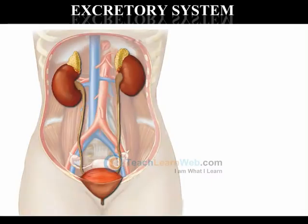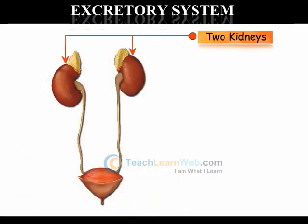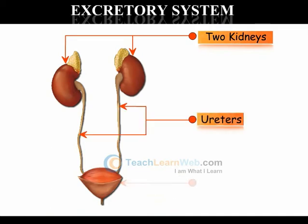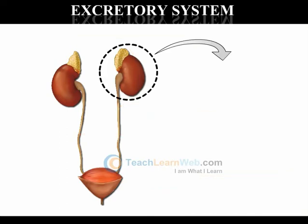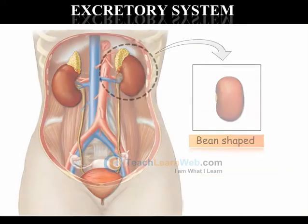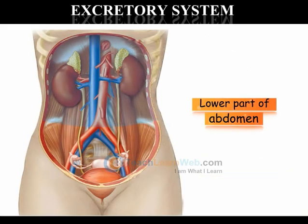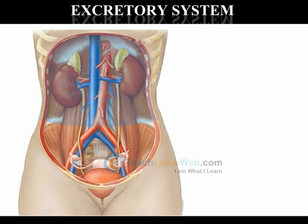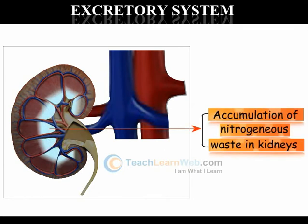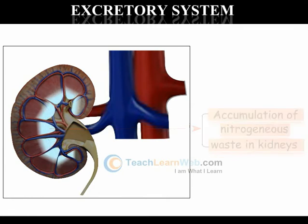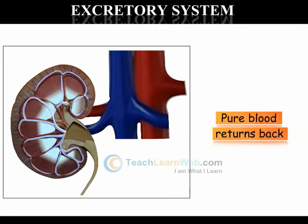The main organs of the excretory system are two kidneys, ureters, and a urinary bladder. Kidneys are bean-shaped structures situated in the lower part of the abdomen. When blood reaches the kidneys, blood capillaries in the kidney filter out harmful substances and retain them, while the pure blood with useful substances is sent back from the kidney.